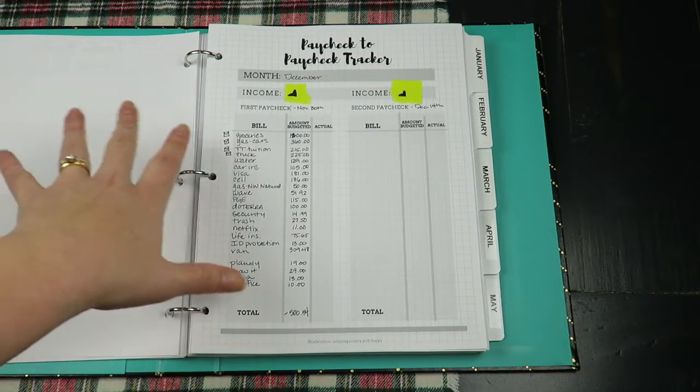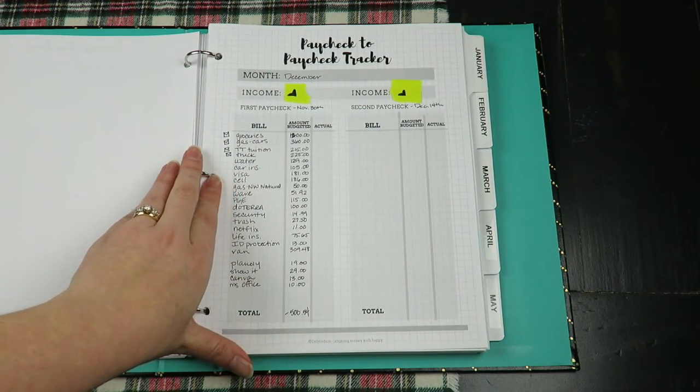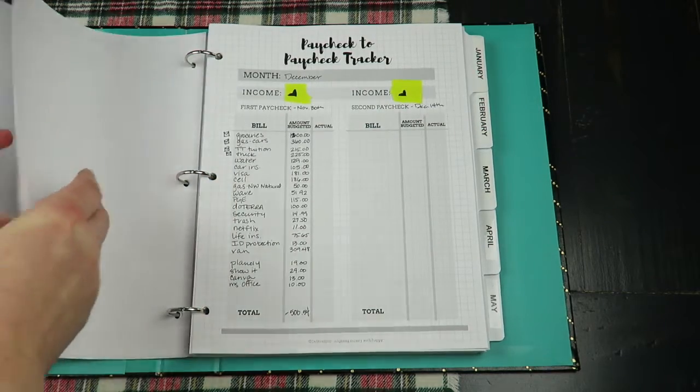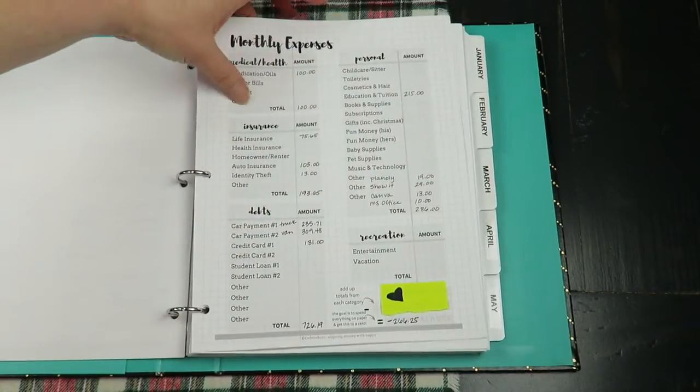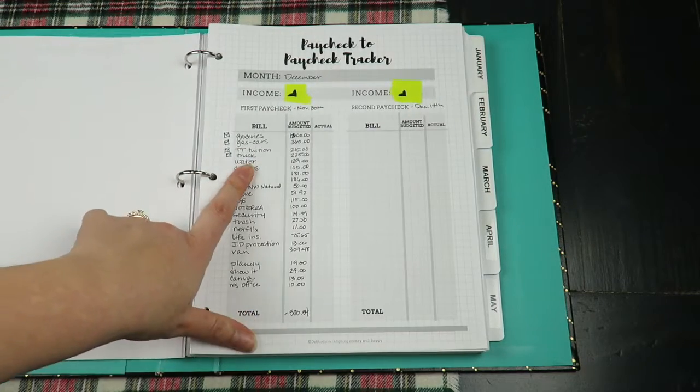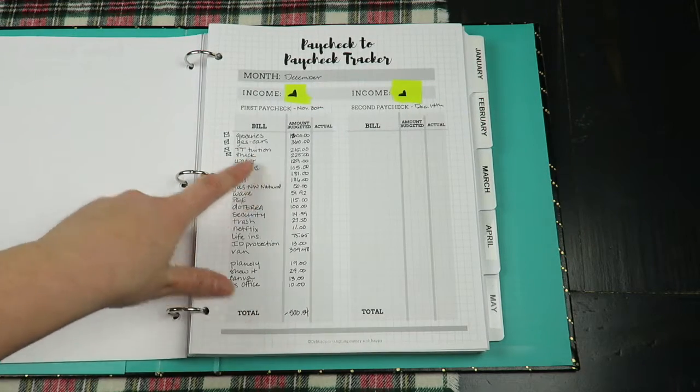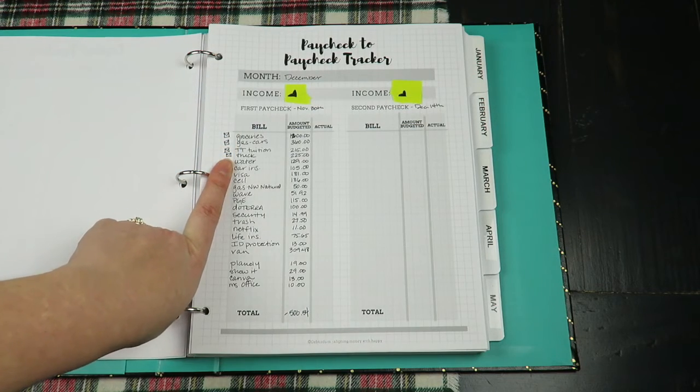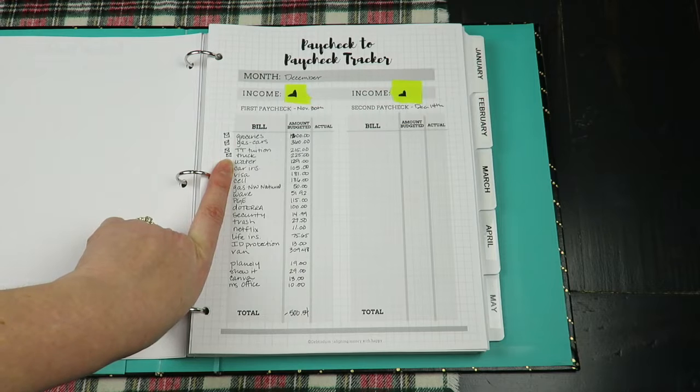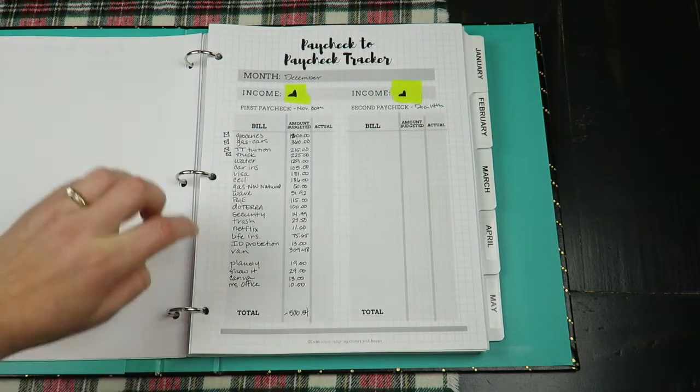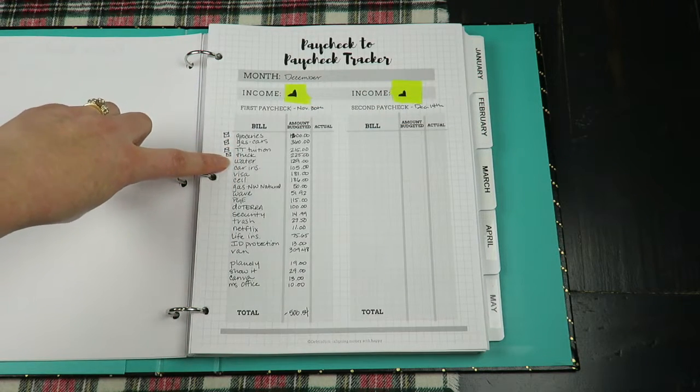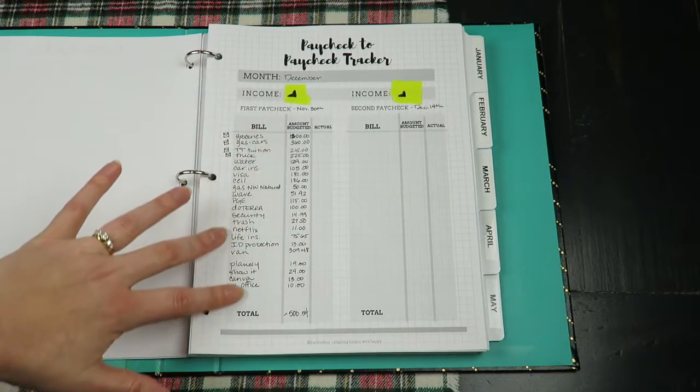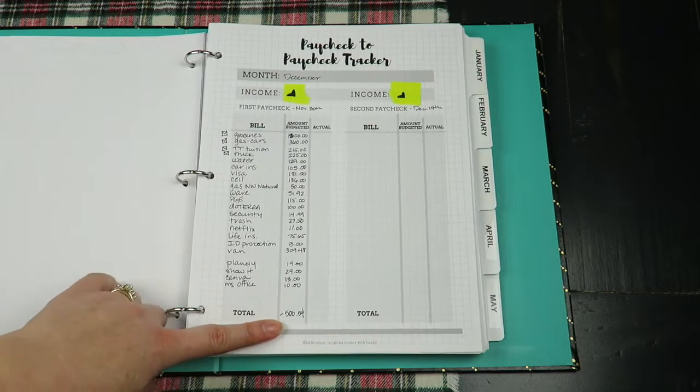Then our paycheck-to-paycheck tracker. I like this, you're just taking your bills and you're transferring from this sheet over to this sheet. These are our four envelopes: groceries, gas, Tennessee's tuition, and our truck is at a different bank. It's kind of complicated but we have to drive there so we like to take cash to that bank and pay it. So that's an envelope and then water, car insurance, Visa, cell.